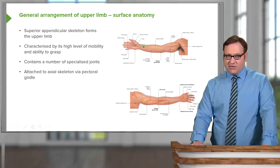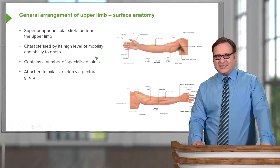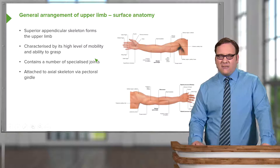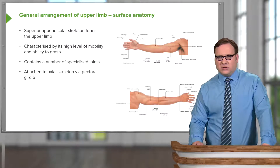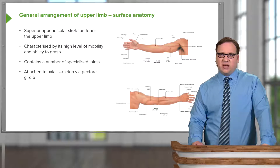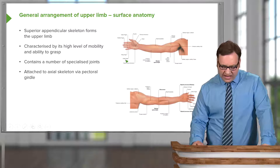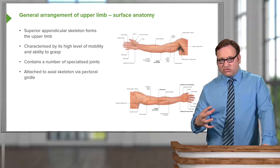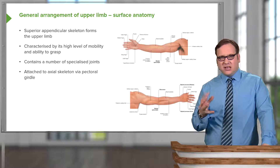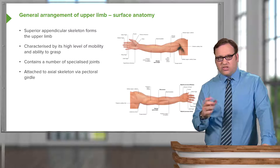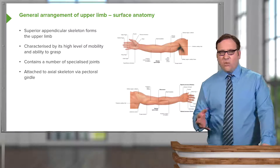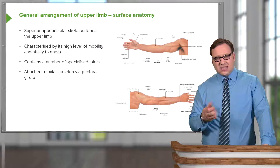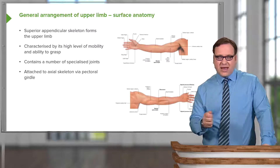This region is part of the superior appendicular skeleton and forms the upper limb. The upper limb is important because it has a high level of mobility, given to it via the pectoral girdle. It is also characterized by its ability to grasp structures — the hand is a really important structure at the distal end, with the ability to manipulate the fingers to hold and grasp. When you're holding a pencil to write, it's a complex arrangement of movements. This is a key difference from the lower limb, which doesn't have as much mobility.